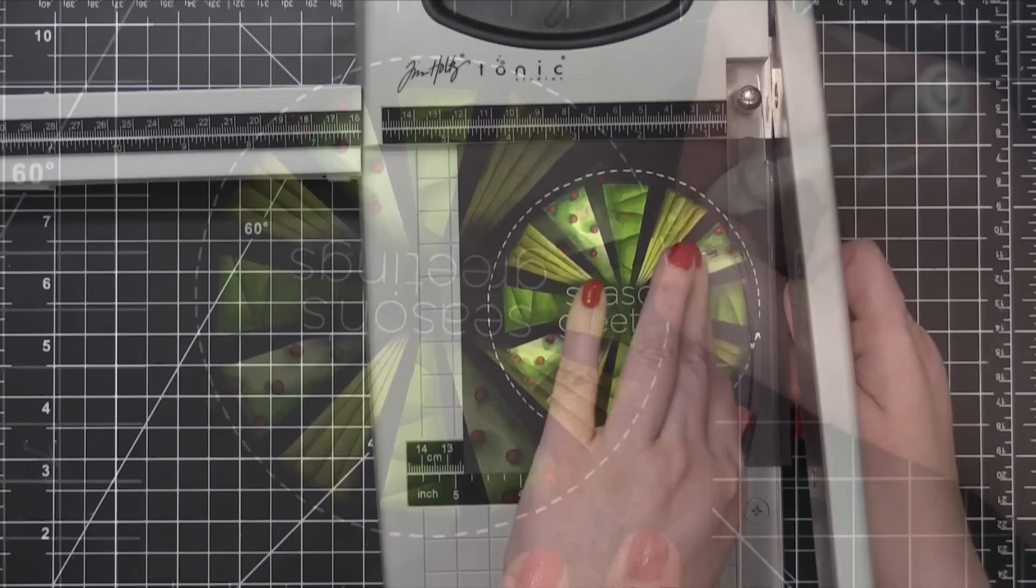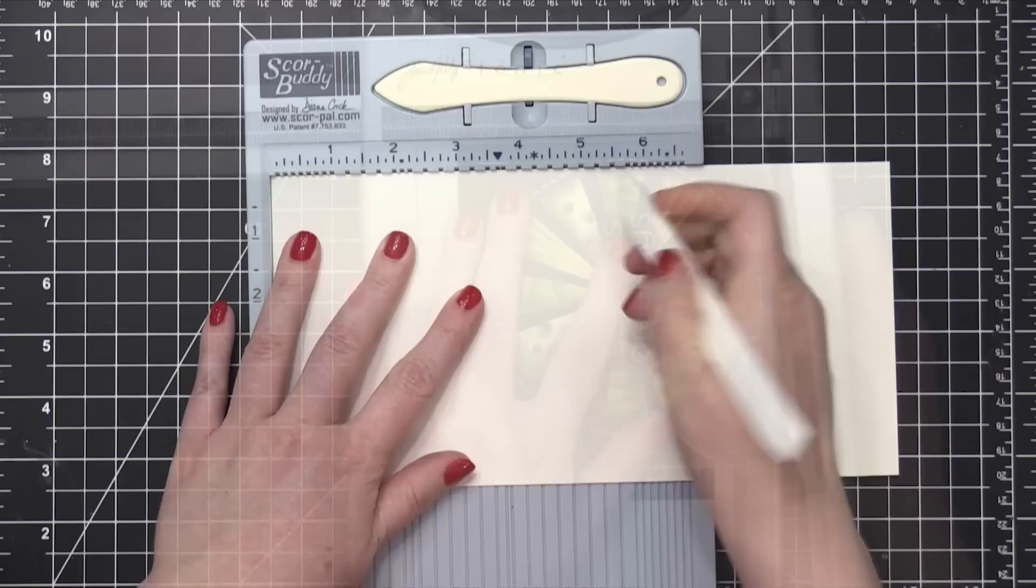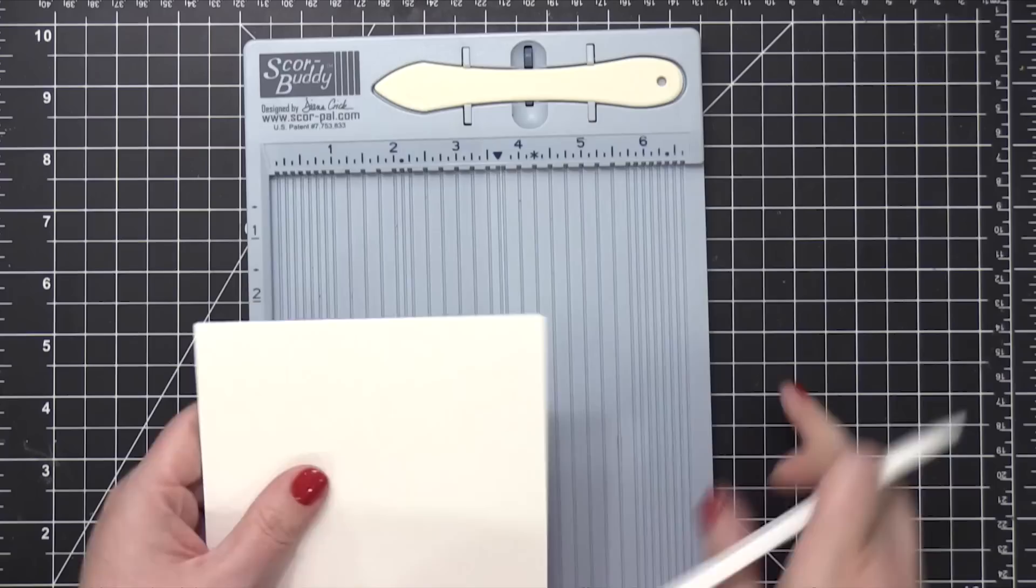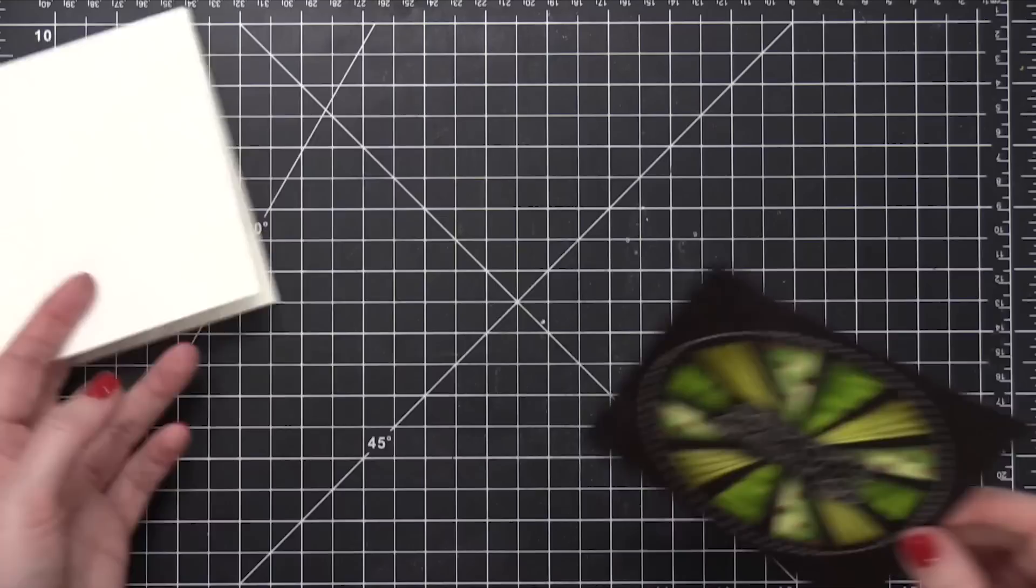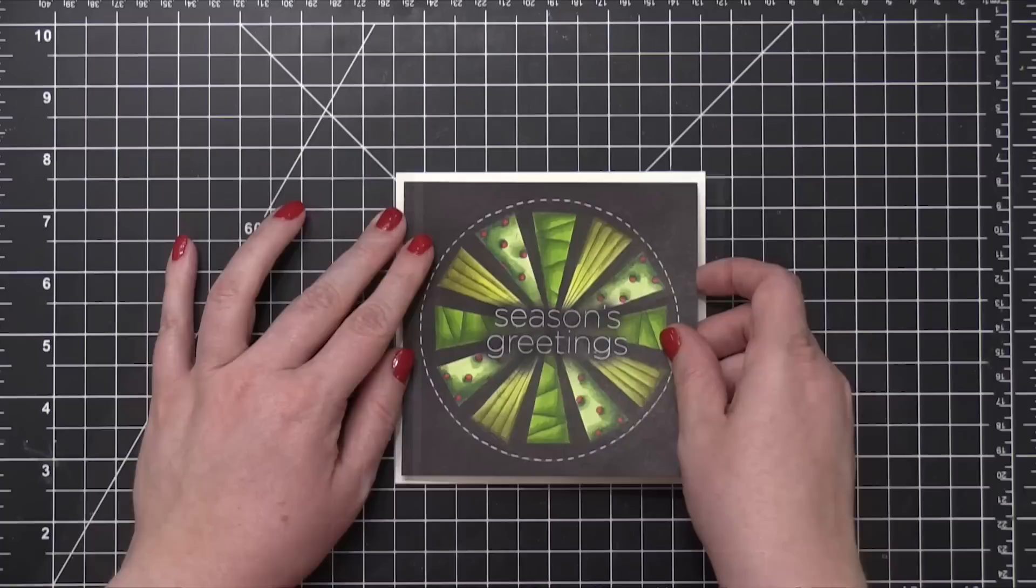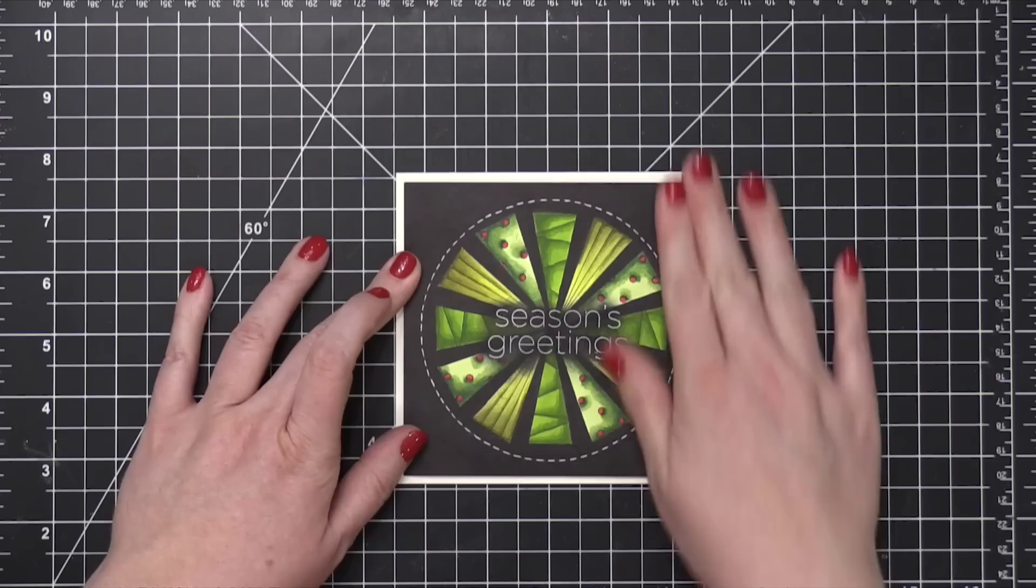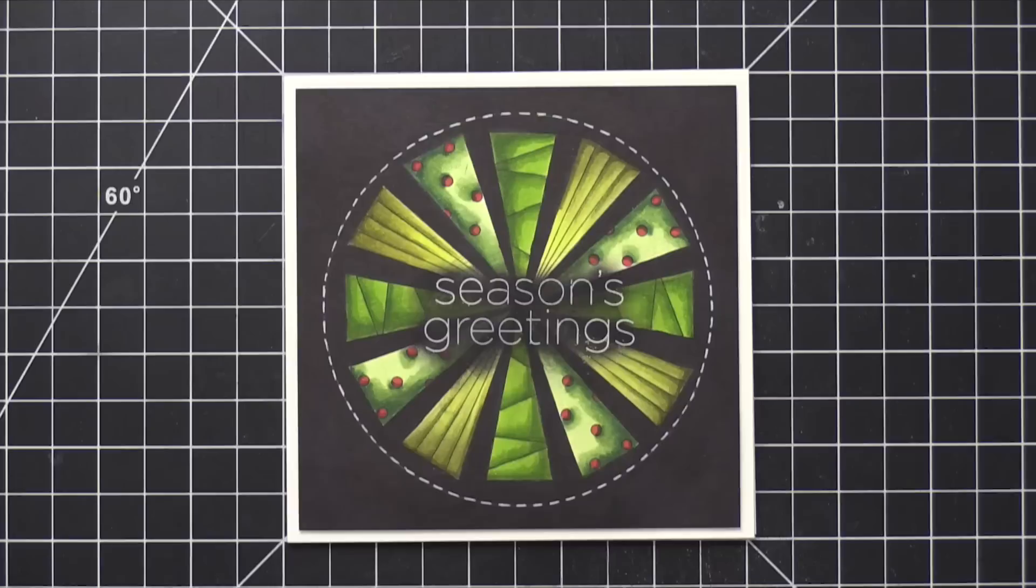Went all the way around that circle, and then after that was on and dry, I used an eraser to erase that pencil line. I did trim down this piece just a little bit, and then created a five-by-five card base out of some Neenah Classic Crest Solar White 110-pound cardstock. I put a bunch of foam tape on the back of my colored piece, and then put it directly on top of that card base. A little bit of a white border around that area, and I think this looks really dramatic and kind of cool.